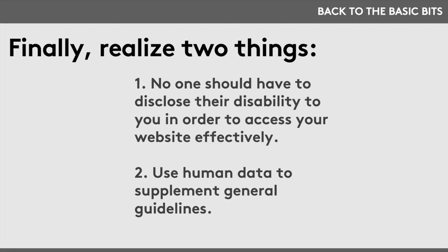Two final things to realize. One: no one should have to disclose their disability status to access your website effectively. Don't skip accessibility because a survey showed no users mentioned using a screen reader — no one should have to tell you they use a screen reader or need captions. Do these things proactively. Two: use human data to supplement guidelines. If you're updating a department website, send it around for feedback. Let people know what's changed, ask them to use it — and you're also letting people know your site is freshly updated and worth visiting.